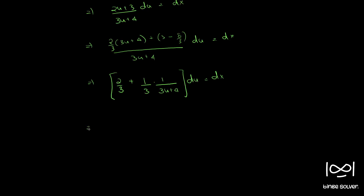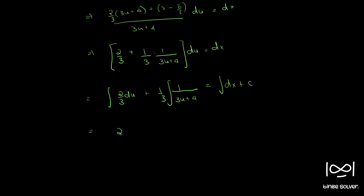Now we integrate both sides. We get 2 by 3 u plus 1 by 3 times log of 3u plus 4 divided by 3, equal to x plus constant.